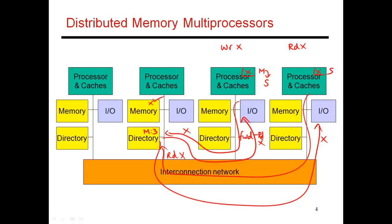It's also possible for node 3 to have directly sent a copy of x to node 4, which would save time — one message instead of going through node 2. There are performance optimizations you can try, but they make the protocol more complex. To keep the discussion simple, we'll assume all transactions go through the directory: if you want to send a copy from node 3 to node 4, you first send it to the directory, which then forwards it to the requester.